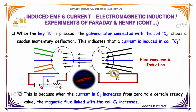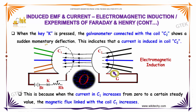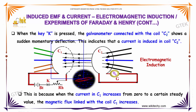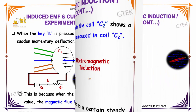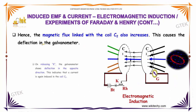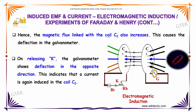When the key K is pressed, the galvanometer connected with coil C2 shows a sudden momentary deflection. This indicates that a current is induced in coil C2. This is because when the current in coil C1 increases from zero to its steady value, the magnetic flux linked with coil C1 increases. Hence, the magnetic flux linked with coil C2 also increases, and this causes a deflection in the galvanometer.